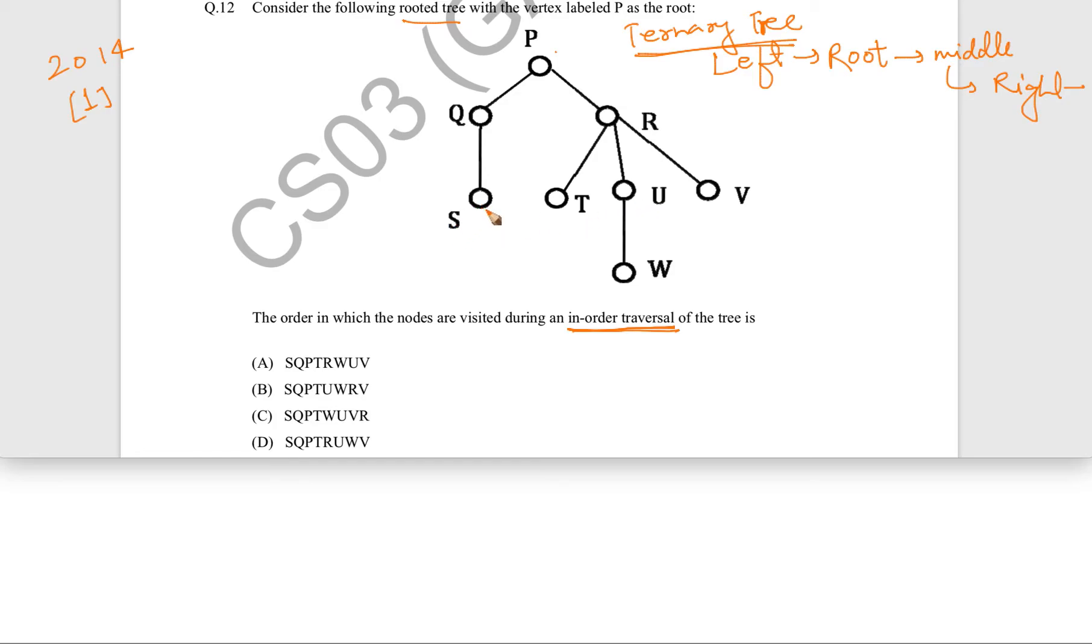So let us start from the left. Now, here if S is a child of Q, then here there is ambiguity. So this S is whether left child or right child or middle child. So here, let us see options. See, we are going to see that in all the four options S, Q, P is there, which means that S comes before Q in the traversal.